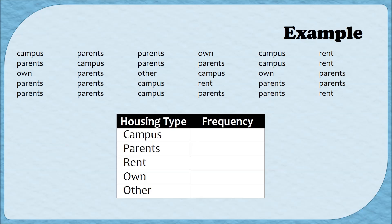The next task is to fill in the frequency column, and there are a couple of different ways to go about this. For example, I could look through my data and simply count up how many times the word 'campus' appears, put that number in, then go through again for 'parents,' and so on. That technique works well for a small data set like 30 values. But I'm going to use a second technique — I'll systematically go through the data and put a tally mark next to each housing type as I come across it.